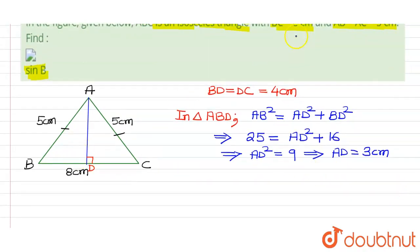Now we have to find the value of sine B. As we can see, sine B equals AD, the perpendicular, upon the hypotenuse AB.